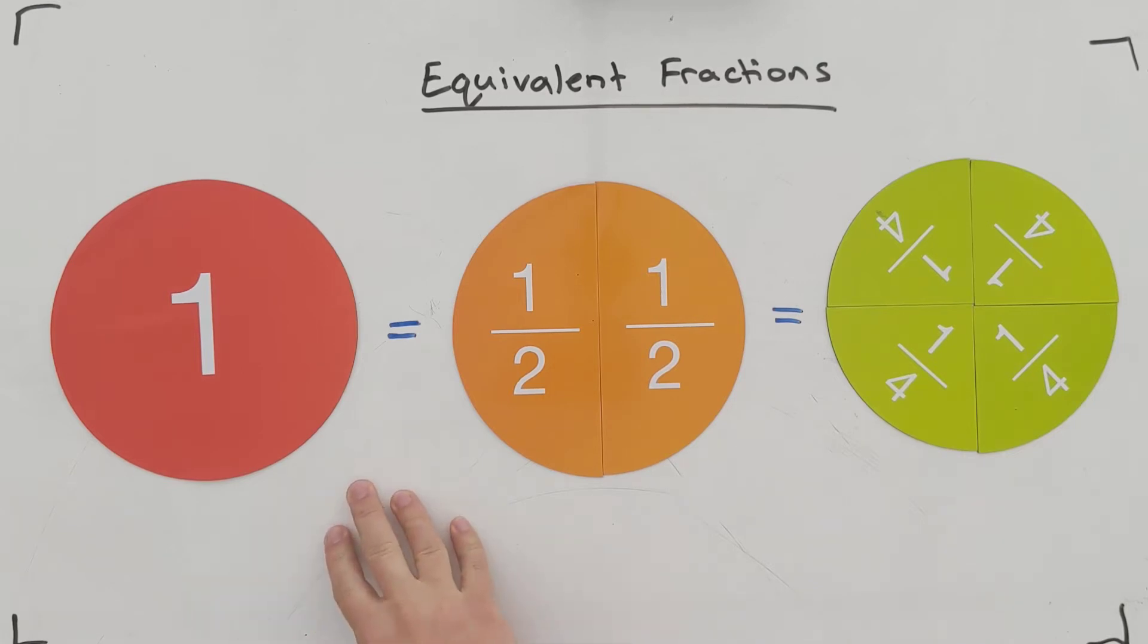You can see I've got some examples here. I've got a whole pizza equal sign, is the same as two halves of a pizza, is the same as four quarters of a pizza. These are all equivalent. One whole is the same as two halves, is the same as four quarters. These are all equal and they are examples of equivalent fractions.